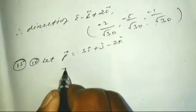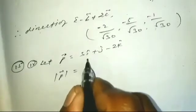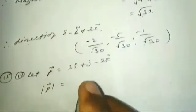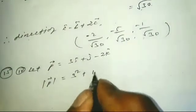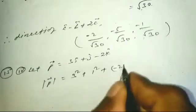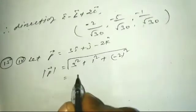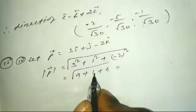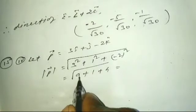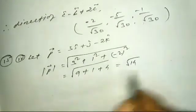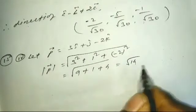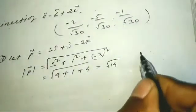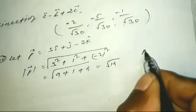Find the magnitude of p. The modulus of p is square root of 3² plus 1² plus (-2)², which is square root of 9 plus 1 plus 4. That gives 1 plus 4 equals 5, and 5 plus 9 equals 14, so magnitude is square root of 14.